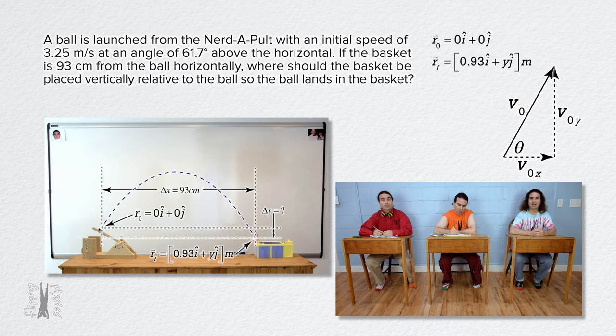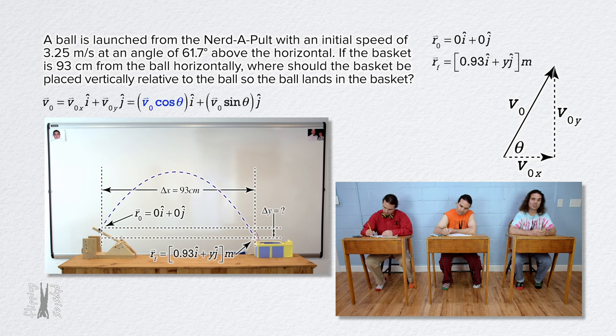The initial velocity, or v-naught, equals the x component of the initial velocity times i plus the y component of the initial velocity times j. The x component of the initial velocity equals, because theta is with the horizontal, it equals initial velocity times cosine theta. The y component of the initial velocity equals initial velocity times sine theta.